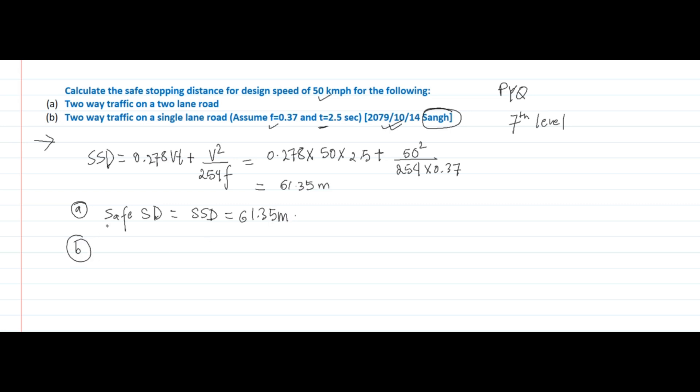Part B: two-way traffic on a single-lane road. If the lane is single-lane and the traffic is two-way, then safe stopping distance equals to two times of SSD. So it will be two times 61.35 meters, equals to...